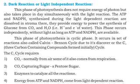This phase is a cyclic process, also called the Calvin-Benson Cycle after its discoverer, or the C3 cycle. C3 refers to the three-carbon-containing compounds that are formed initially in this cycle.